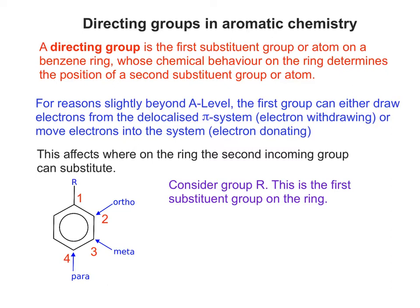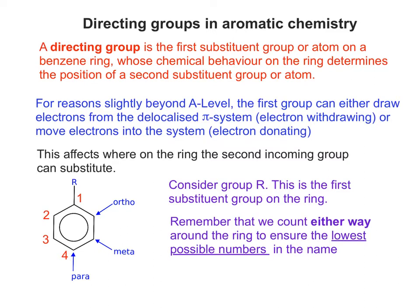Why haven't I mentioned positions 5 or 6? We count either way around the ring to ensure the lowest possible numbers in the name. Position 2 can be in one of two places, position 3 could also be in one of two places, but position 4 stays in the one place opposite carbon number 1.